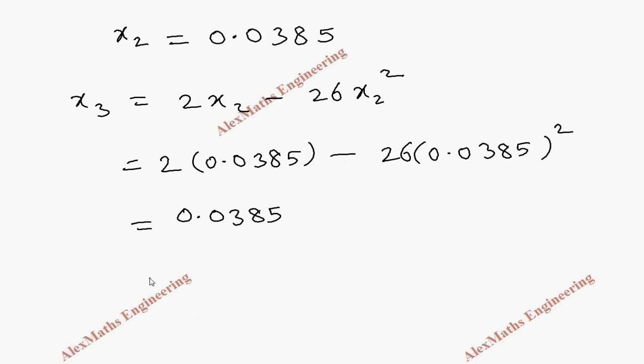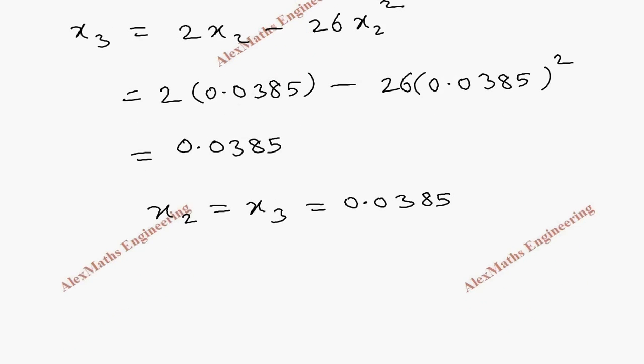So the better approximate root is 0.0385. Here, root in the sense means the value of 1 by 26. The value is 0.0385.